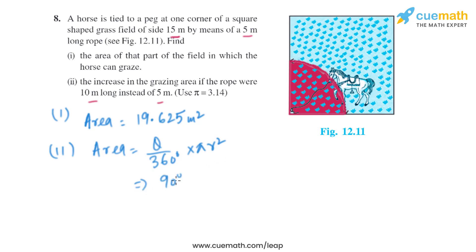So it will be 90 degrees divided by 360 degrees multiplied by 3.14 and multiplied by 10 square. On solving this, we get the area as 78.5 square meters.